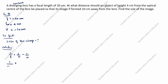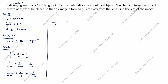Substituting: 1/(-20) = 1/(-10) - 1/u. Rearranging: 1/(-20) + 1/10 = -1/u. Taking the common denominator of 20: (-1 + 2)/20 = -1/u, so 1/20 = -1/u, giving u = -20 centimeters.